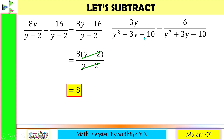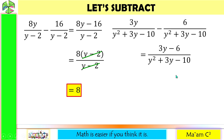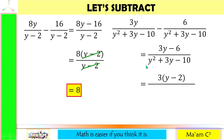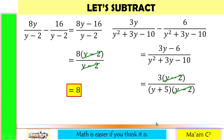Let's have another one: 3y over (y² + 3y − 10) minus 6 over (y² + 3y − 10). We subtract the numerators to get 3y minus 6 over (y² + 3y − 10). The GCF of the numerator is 3, giving us 3(y minus 2). The denominator is a trinomial where a equals 1, and its factors are (y + 5)(y − 2). We can cancel out the common factor (y minus 2), so our final answer is 3 divided by (y + 5).